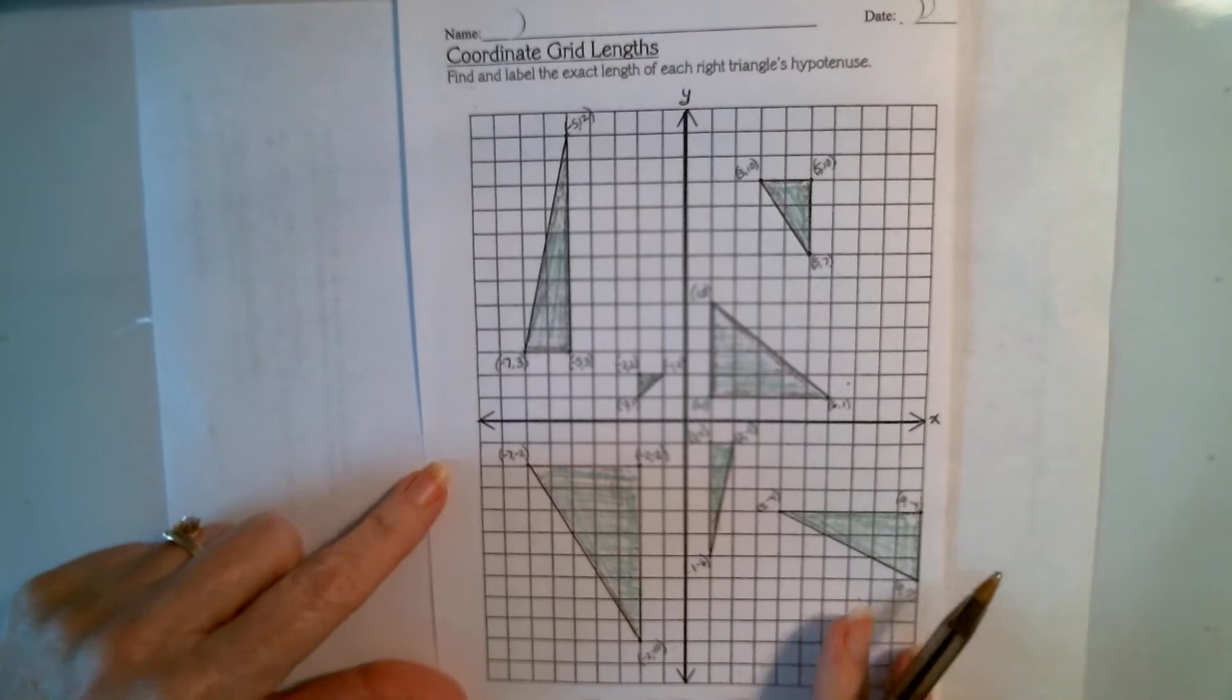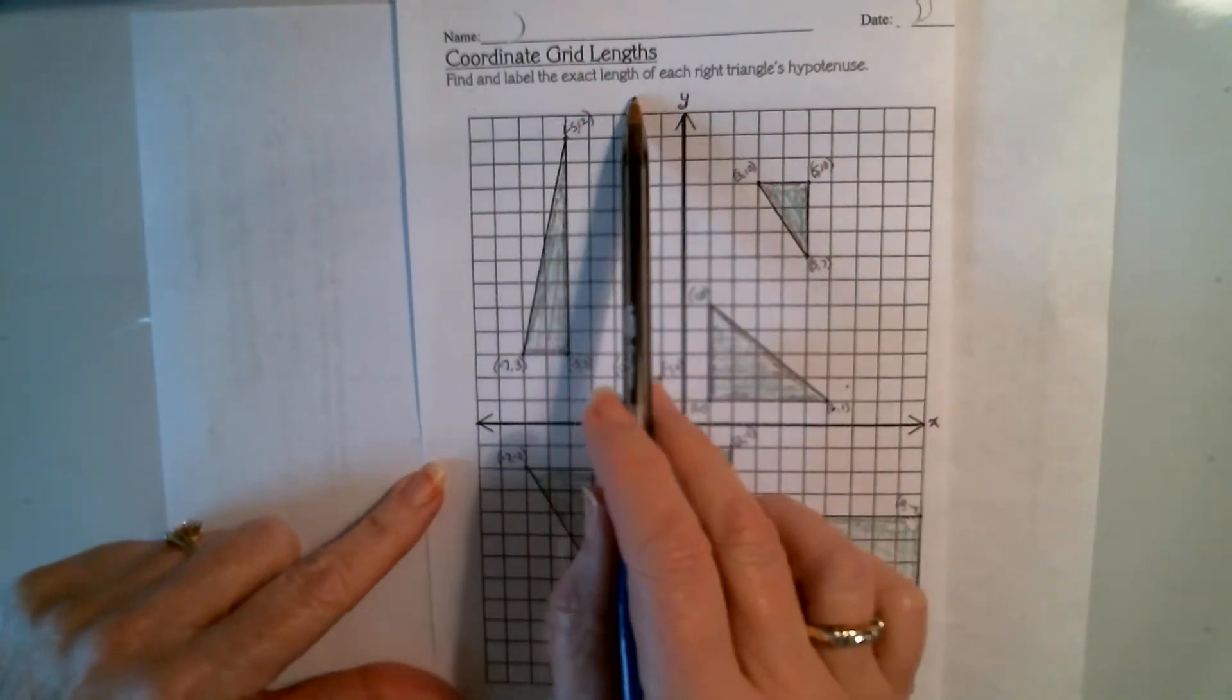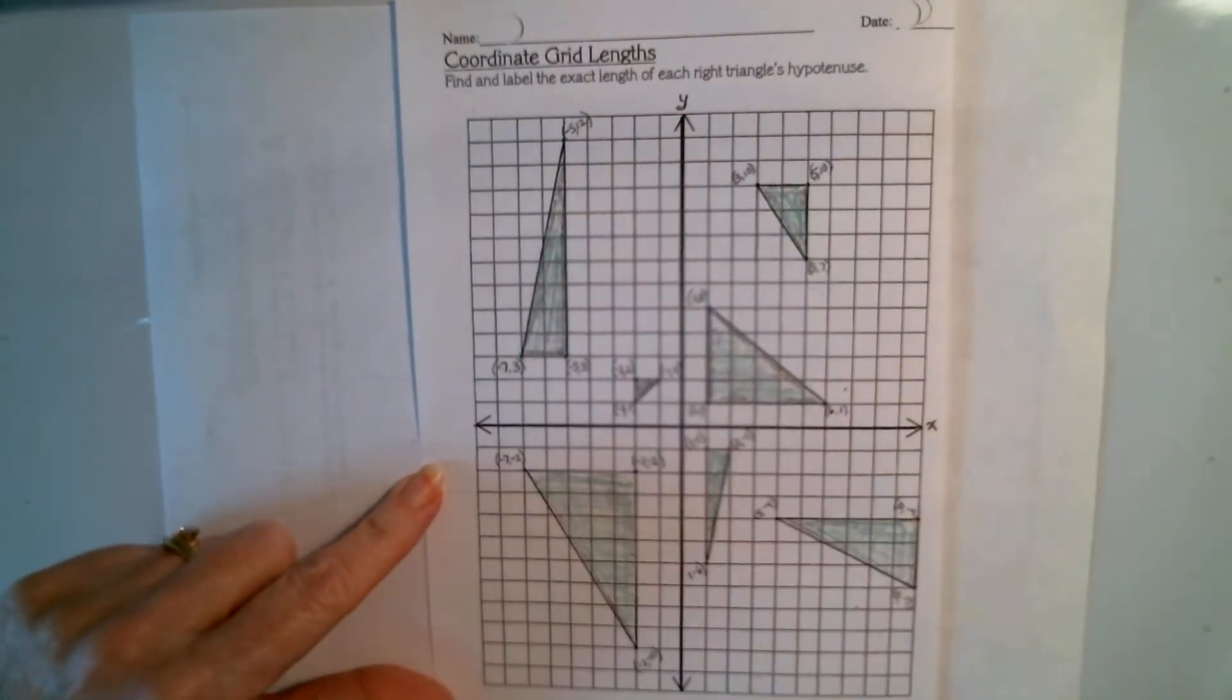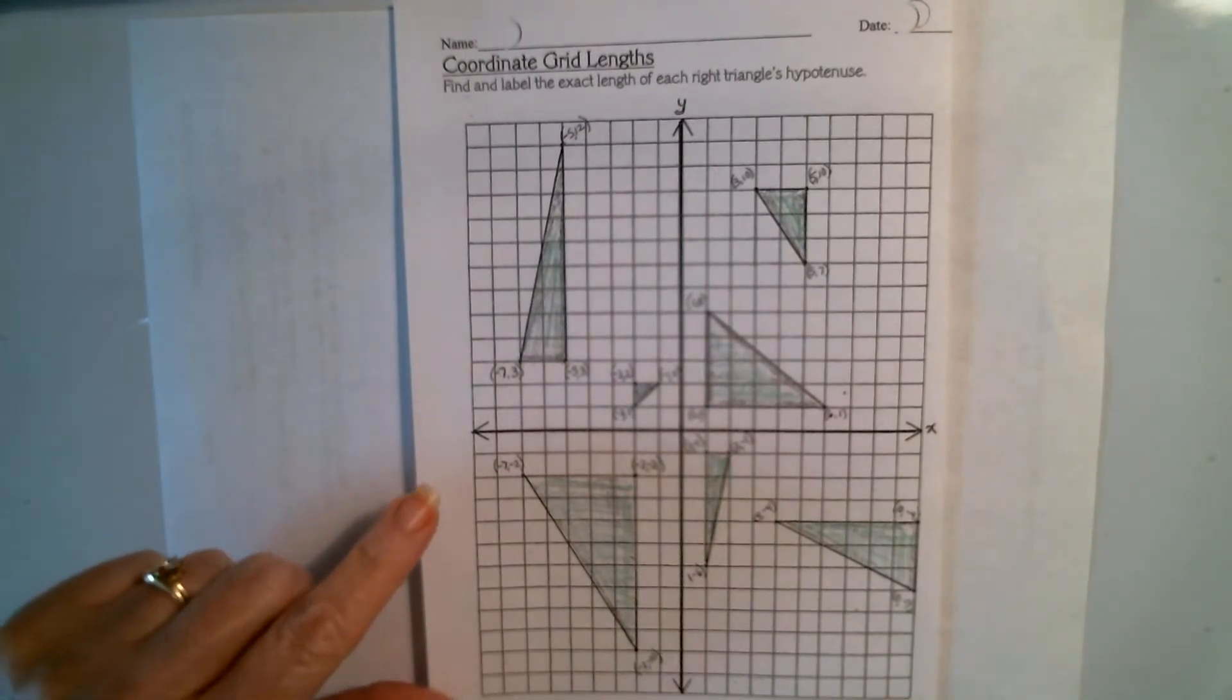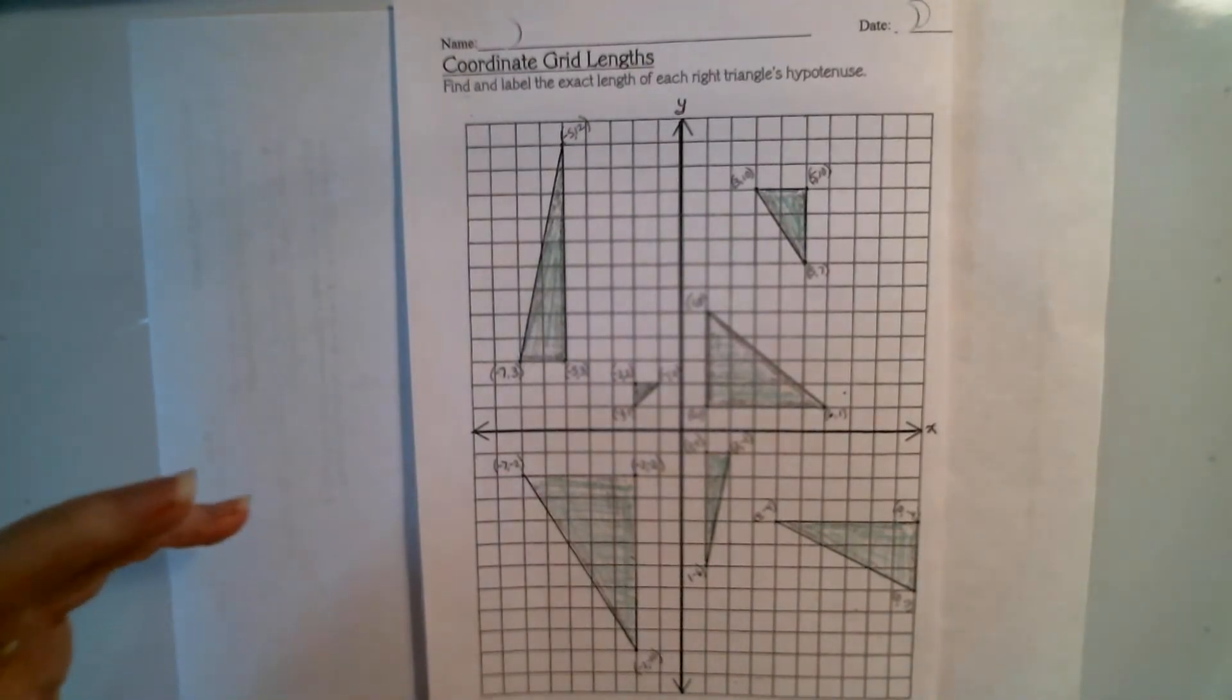We're supposed to find and label the exact length of each right triangle's hypotenuse. So we're going to do a couple of these together, and then I'm going to let you do the rest on your own, and we'll come back and check how you did on it.